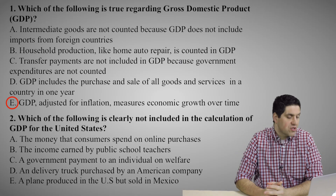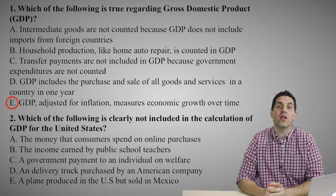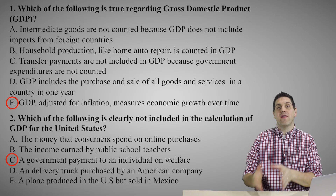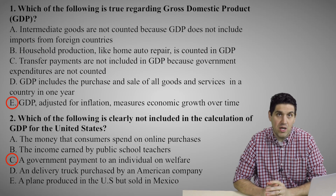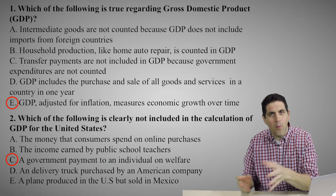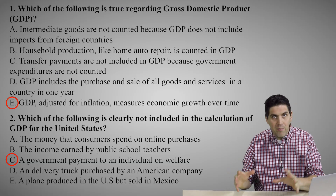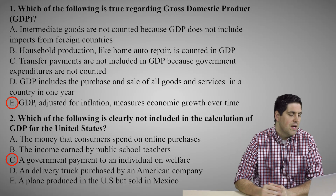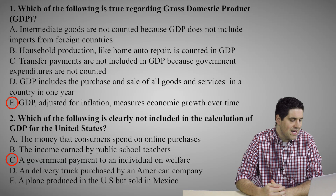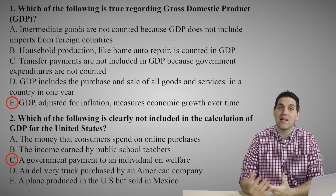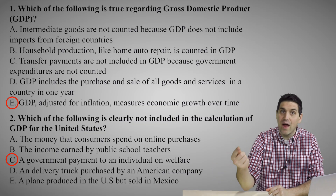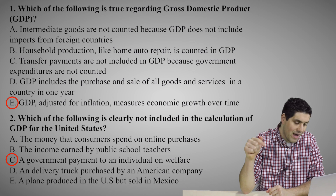Question number two: which of the following is clearly not included in the calculation of GDP for the United States? The right answer is C — a government payment to an individual on welfare. That's a transfer payment; it doesn't count towards GDP. A is wrong because money consumers spend on online purchases of new, non-intermediate goods does count. Public school teacher wages count via the income approach. A delivery truck purchased by an American company is investment, so that counts. A plane produced in the US but sold in Mexico is a US export, so it counts towards US GDP.